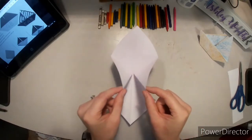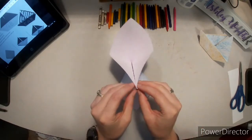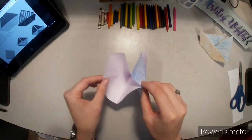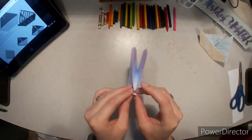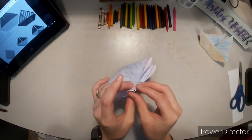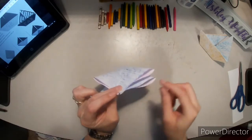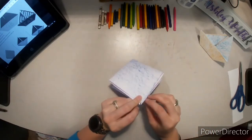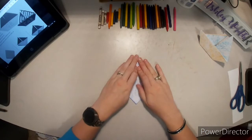And we're going to bring this outside corner in and this outside corner in. Now we are going to smoosh it so that we have two flappies on this side and two flappies on this side, smooshing it down.